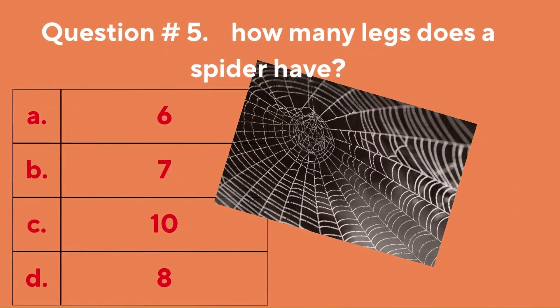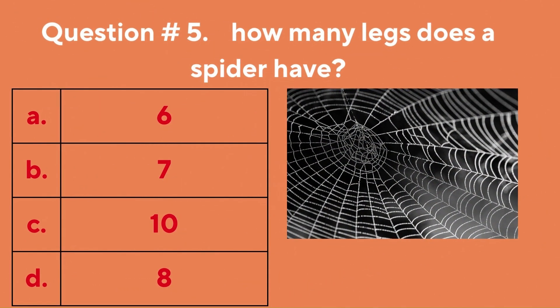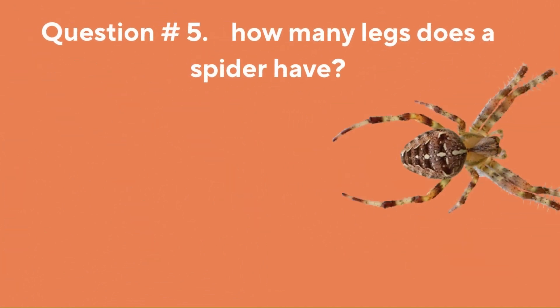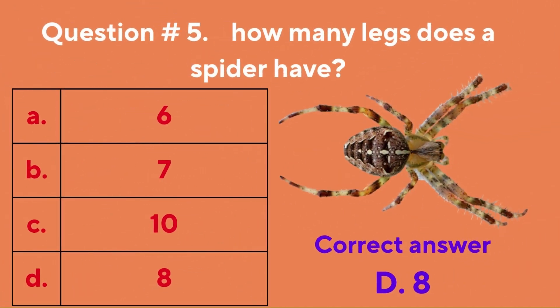Question number five: how many legs does a spider have? A. Six, B. Seven, C. Ten, D. Eight. The correct answer is D. Eight.